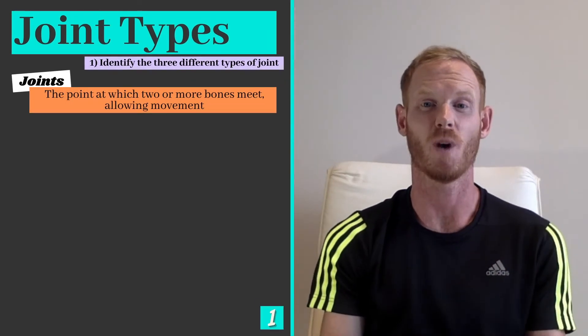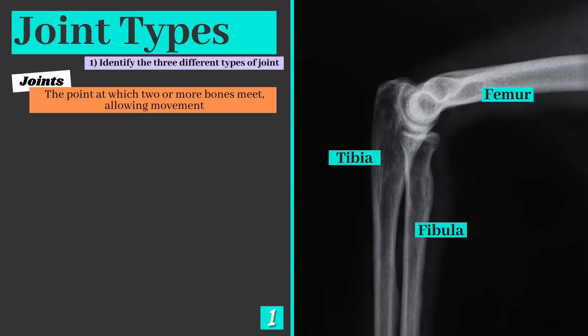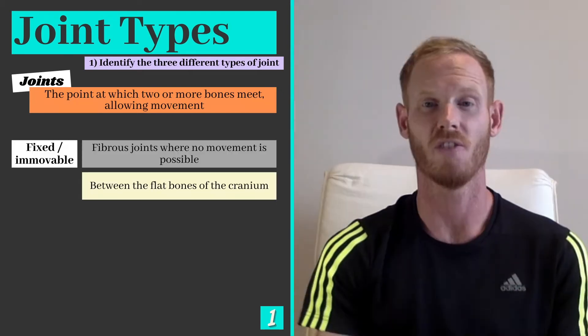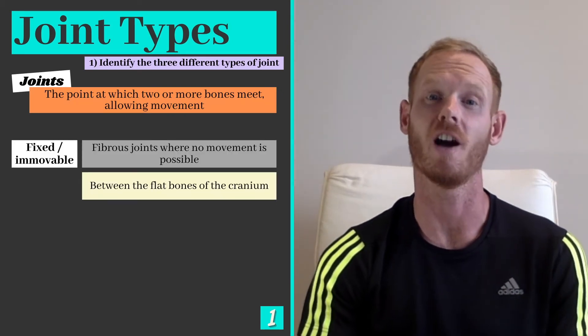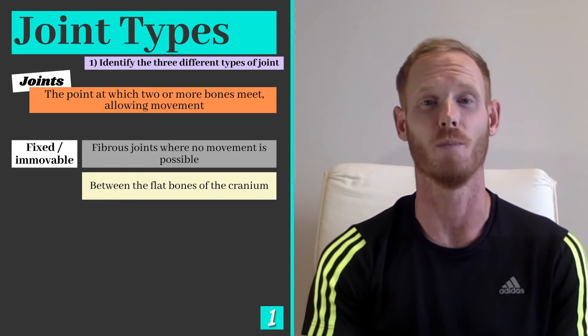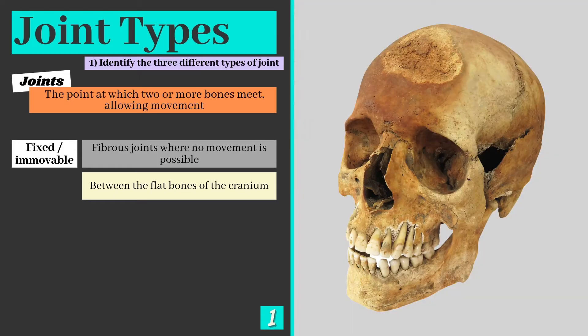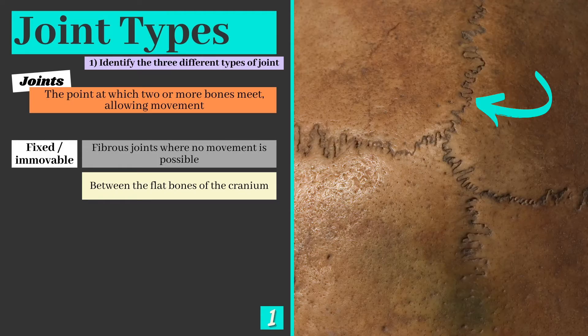A joint is the point at which two or more bones meet, allowing movement. The first type of joint within the human body are fixed or immovable joints. These are fibrous joints where little or no movement is possible. They can be found between the flat bones that fuse together to form the skull or the cranium.